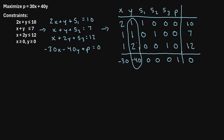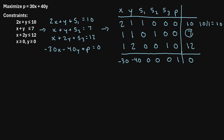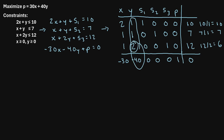Now we want to identify the pivot element in this column. To do that, we look at the values on the right-hand side and divide them by the corresponding value in our pivot column. So 10 divided by 1 is 10, then 7 divided by 1 is 7, and 12 divided by 2 is 6. The smallest of these values is 6, so the corresponding value in our pivot column — which is this 2 — is our pivot element. We want to make this 2 a 1, and make every other value in the pivot column equal to 0.